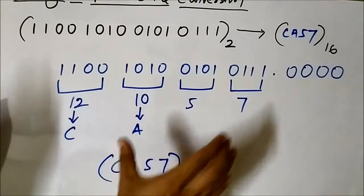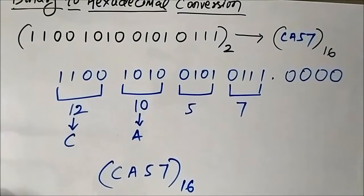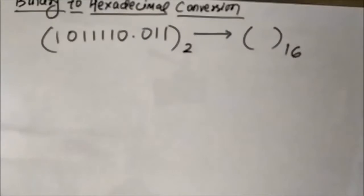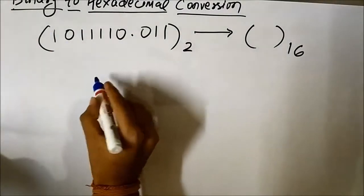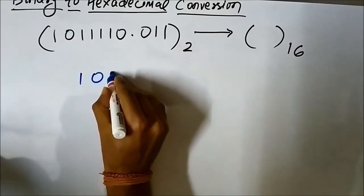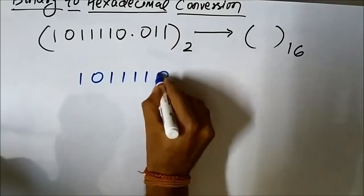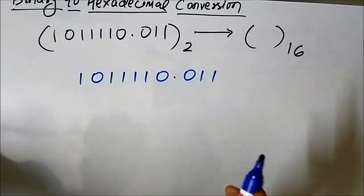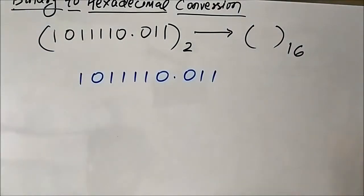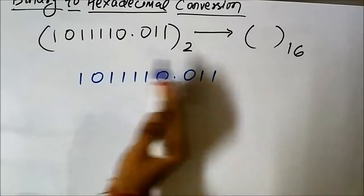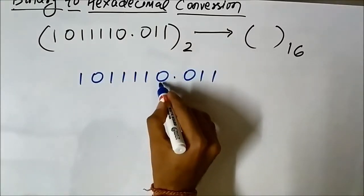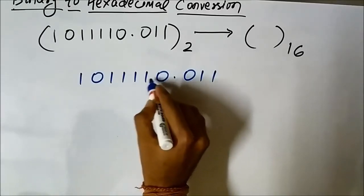Let us take another example. We have another binary number and we have to convert it into its equivalent hexadecimal form. Let us write it down: 1 0 1 1 1 1 0 . 0 1 1. The key tip here — which I also mentioned in binary to octal conversion — is that for the whole portion, to the left of the binary point, always start forming 4-bit groups from the LSB bit, going from right to left.